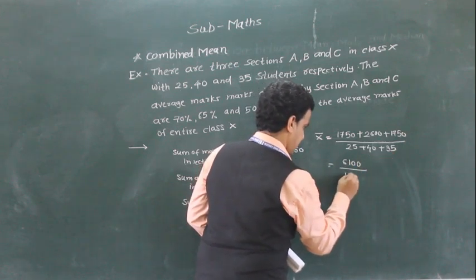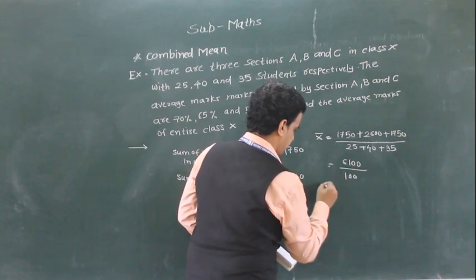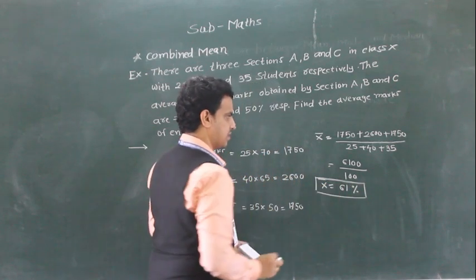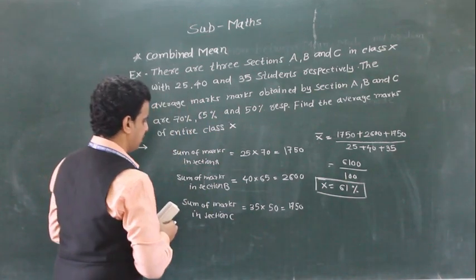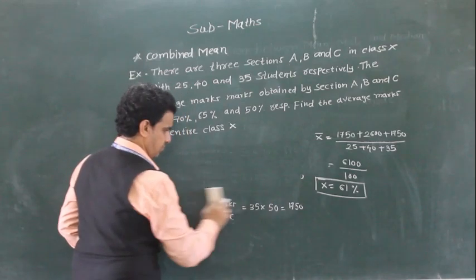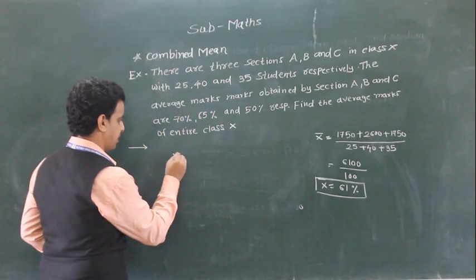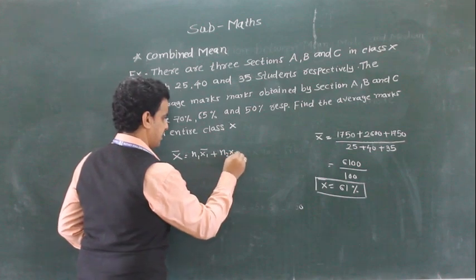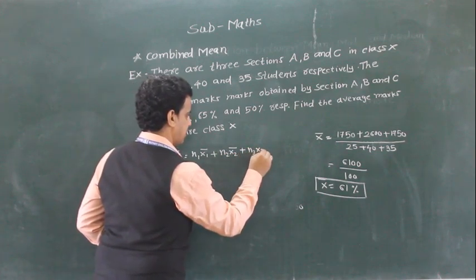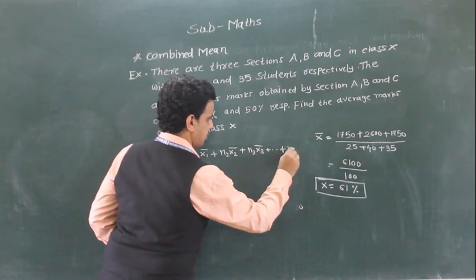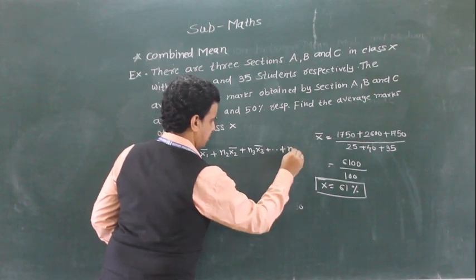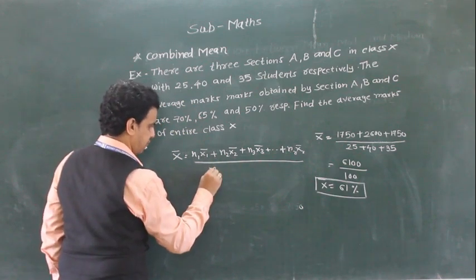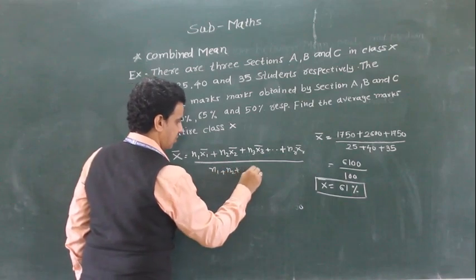So the total sum is 6100, and the average of the entire class is 61%, so x-bar is equal to 61%. Or we can find this directly using the combined mean formula: x-bar is equal to (n1·x1-bar plus n2·x2-bar plus n3·x3-bar and so on) divided by (n1 plus n2 up to nr). This is the formula to find combined mean.